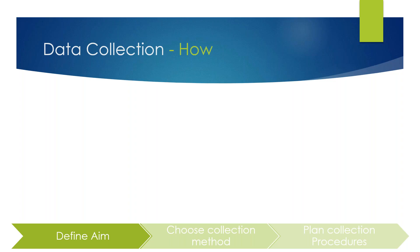To define your aim, the first thing you need to do is identify your problem statement. Before starting any data collection process, identify exactly what you want to achieve — write down your problem statement, what practical or scientific issue you're addressing, and how it matters, whether it improves sales, customer base, market penetration, or market expansion.